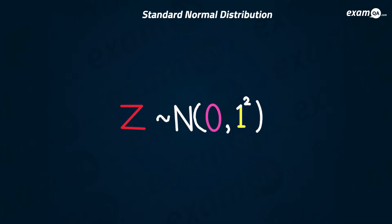Once you've standardized your values — whether scores in a test or something else — these standardized values, the z values, have a normal distribution also. They're normally distributed with mean 0 and standard deviation 1. This is the standard normal distribution.